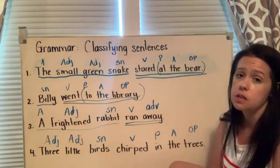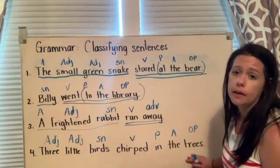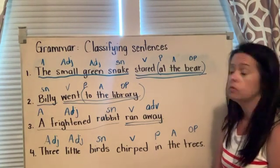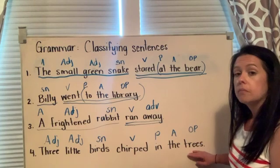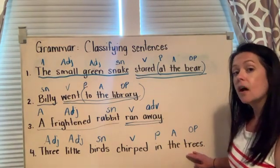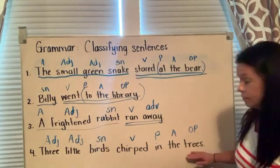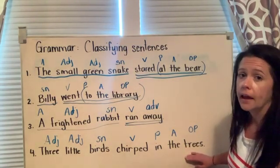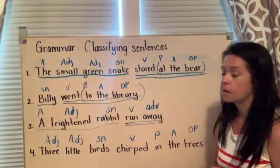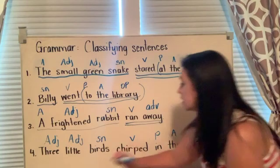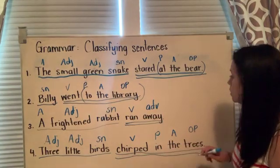Before we do the complete subject and complete predicate, I want you to remember — we have been talking about singular and plural nouns. We know that an object of a preposition is going to be a noun. In this example, the object of the preposition is trees. Is this a singular or plural noun? Hopefully you said plural noun, because trees means more than one. The complete subject is three little birds. Complete predicate: chirped in the trees.